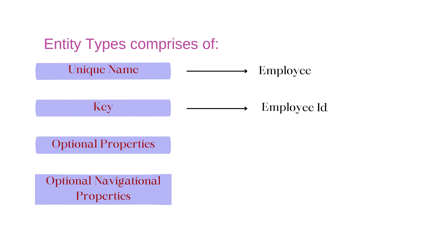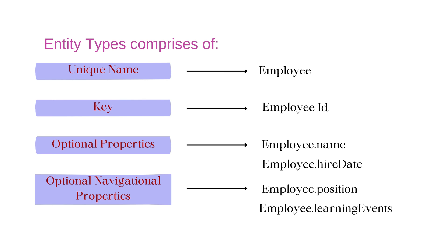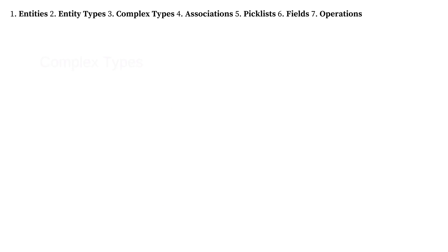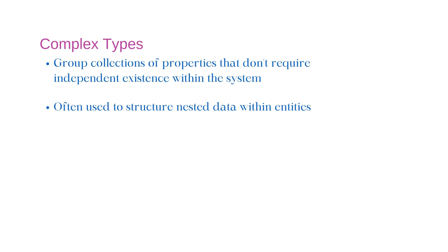In optional properties, it can have properties like employee.name or employee.hireDate. And optional navigation properties basically allow connections to other related entities — for example, employee-to-position or employee-to-learning events. The next data model object is Complex Type. A complex type is a grouped collection of properties that don't require independent existence within SAP SuccessFactors. We use complex types to structure nested data within entities, for example, an address or a compensation detail.